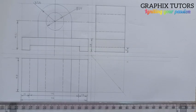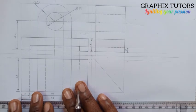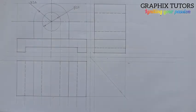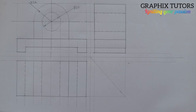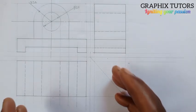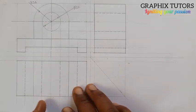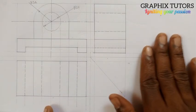Good day everyone, my name is Graphics. Today we want to learn how to convert or transform orthographic projection into isometric projection. This is what we have — normally this is the elevation, this is the plan, and this is the end view. Let me assemble this to give you a better explanation on how we go about this.